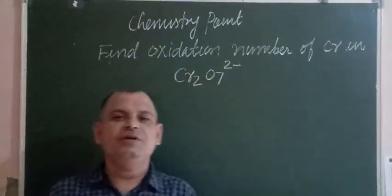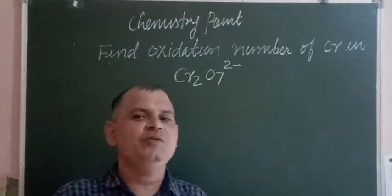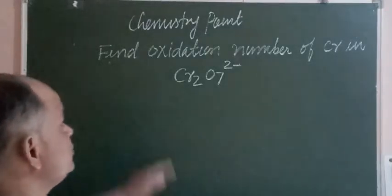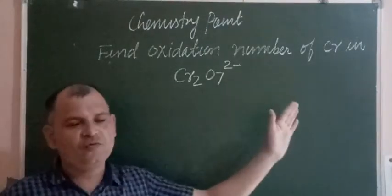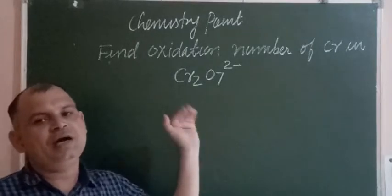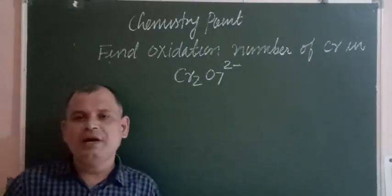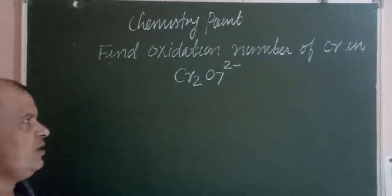Hello students, welcome to Chemistry Point. In this video we will find the oxidation number of chromium in chromate ion. So here Cr2O7 2- ion is given and we want to find out the oxidation number of Cr.